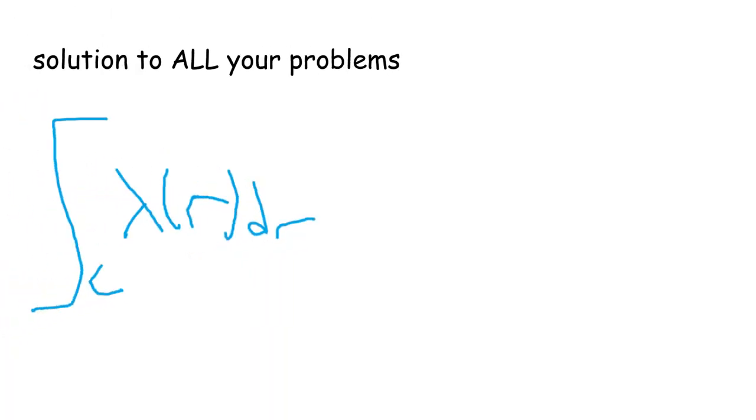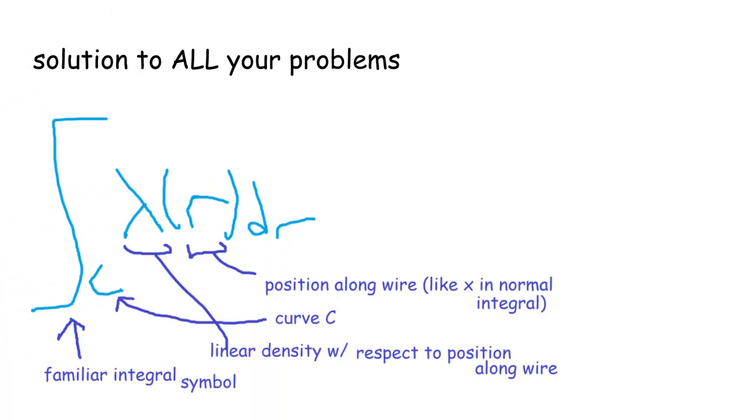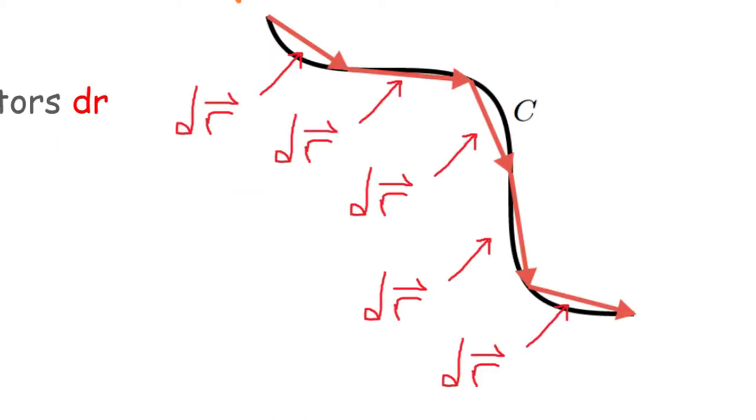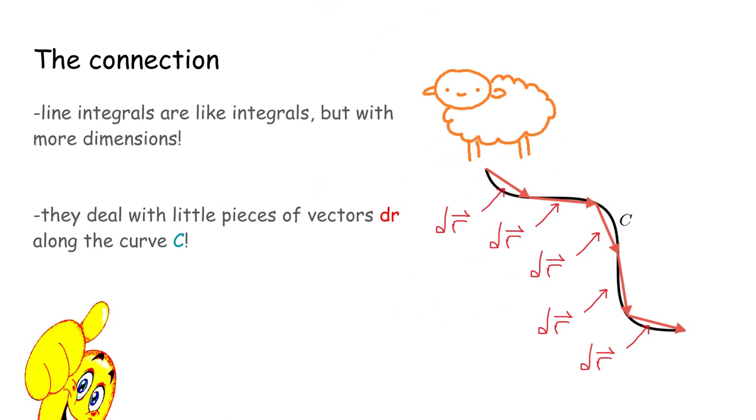Well, here's the solution to all your problems. We have the familiar integral symbol, and then there's a little C, which is the curve we're integrating along. Then, the integrand has the linear density with respect to the position along the wire, and we're multiplying that with dr. Like the integrals we've dealt with in class, you can imagine dr as infinitely tiny pieces of vectors along the curve C. This makes line integrals like definite integrals but with more dimensions.